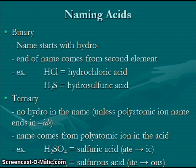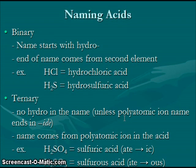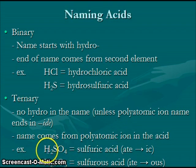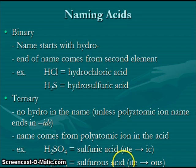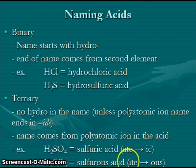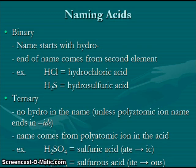Ternary acids are formed when hydrogen ions combine with polyatomic ions. We do not use 'hydro' in the name unless the polyatomic ion ends in '-ide.' The name comes from the polyatomic ion in the acid. For example, H2SO4 comes from hydrogen sulfate and is called sulfuric acid when dissolved in water. H2SO3 is hydrogen sulfite and is called sulfurous acid. Note that the '-ate' ending changes to '-ic,' and the '-ite' ending changes to '-ous.'